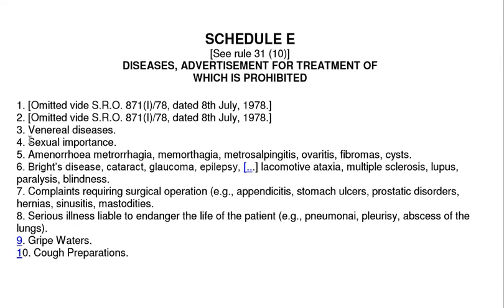The prohibited diseases list includes: venereal diseases, sexual impotence, malaria, metrorrhagia, mammary conditions, menorrhagia, mastopathies, ovaritis, fibromyalgia, Bright's disease, cataract, glaucoma, epilepsy, locomotor ataxia, multiple sclerosis, blindness, and complaints requiring surgical operations such as appendicitis, stomach ulcer, prostatic disorder, hernias, sinusitis, mastoiditis, and serious illnesses liable to endanger life including pneumonia, pleurisy, abscess, and related conditions.